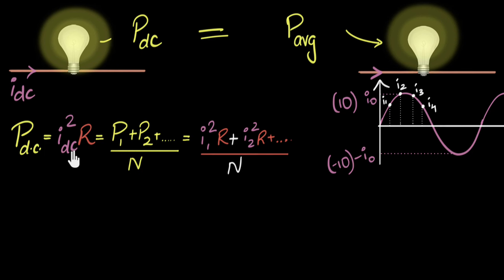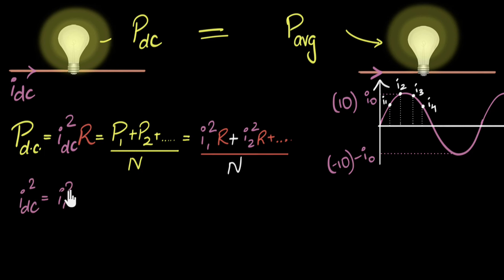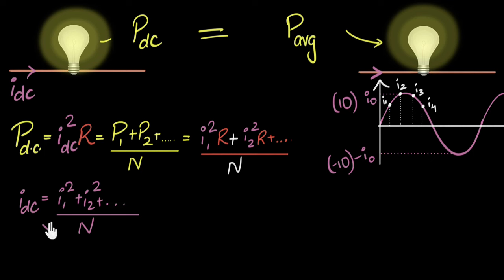Our goal is to find I_DC. From these two equations, R is common and cancels on both sides, so I_DC² equals I₁² plus I₂² and so on, divided by n. Taking the square root of both sides, I_DC equals the square root of (I₁² + I₂² + … ) divided by n. That's how you calculate the current needed to give the same power as the average power from the alternating current.